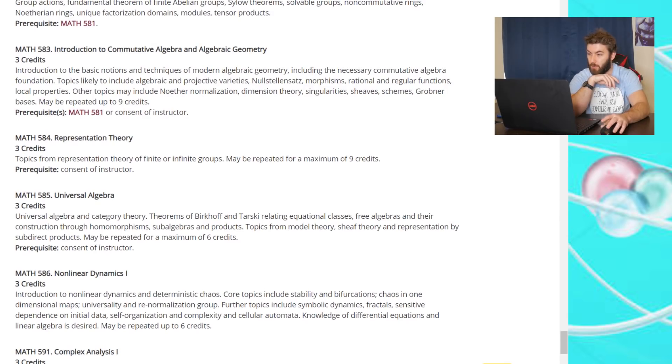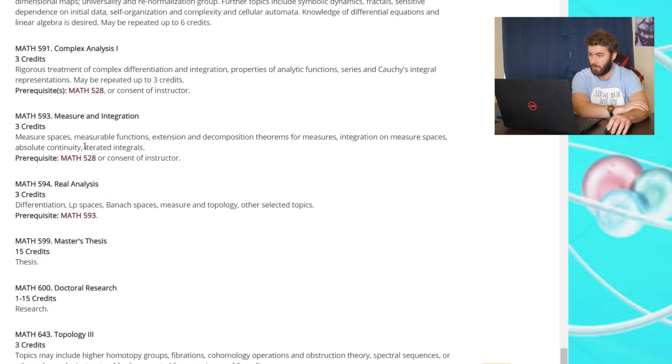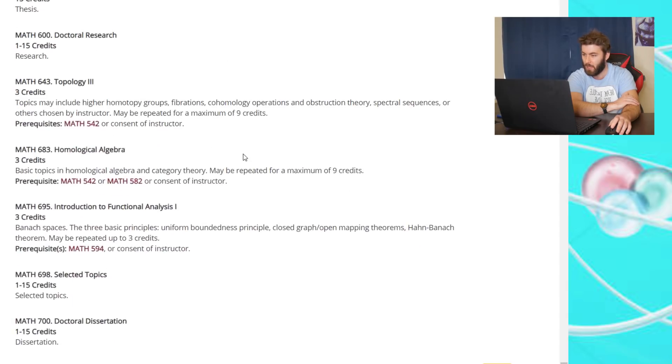Introduction to commutative algebra and algebraic geometry. Universal algebra. I've never heard of that before. Universal algebra and category theory. Okay. Let's see. Anything else? Complex analysis. Rigorous treatment of complex differentiation and integration. Properties of analytic functions. Series and Cauchy's integral representations. Apparently, I always say that wrong. Cauchy. Kochi. I'm just going to say Koshi to piss people off. Measure and integration.